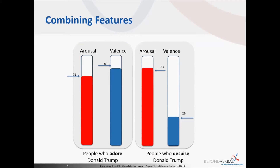For example, someone who adores Donald Trump would have a higher arousal — they would be excited about Donald — and also a high valence, meaning positively excited. Whereas people who dislike Donald Trump would have a high arousal but a very low valence. The variance can be between these two measurements depending on how the speaker feels at that given time.